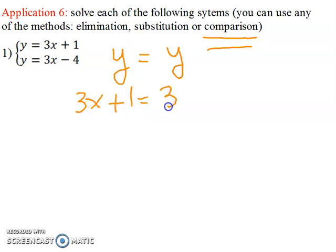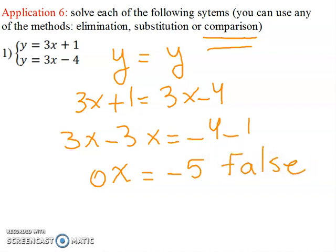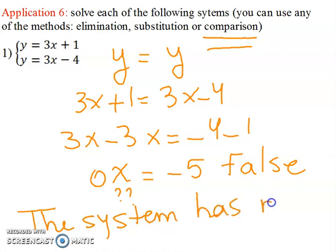Setting y equal y: three x plus one equal three x minus four. Separating variables and constants: three x minus three x on the left, and minus four minus one on the right, giving zero x equal minus five. This is impossible — no number multiplied by zero gives minus five. Since we get an impossible result, the system has no solution.